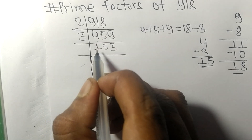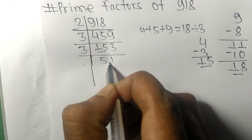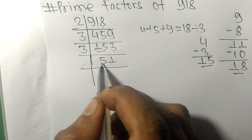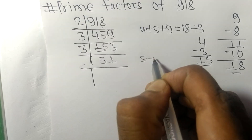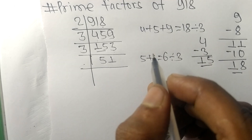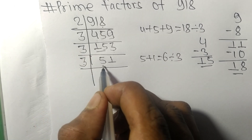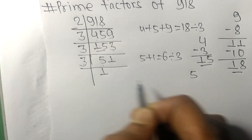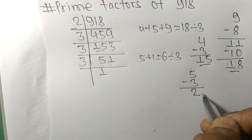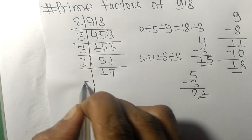153 is exactly divisible by 3: 3 times 5 is 15, 3 times 1 is 3, so now we get 51. When we add the digits 5 plus 1 we get 6, and 6 is exactly divisible by 3, so 51 is also divisible by 3. Dividing: 3 times 1 is 3, subtract to get 2; bring down 1 to get 21; 3 times 7 is 21. So now we get 17.